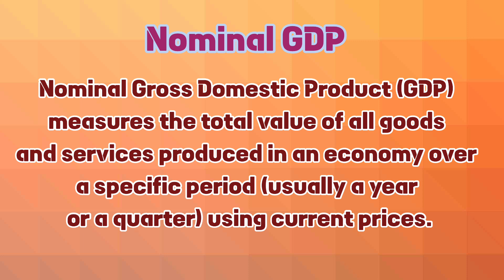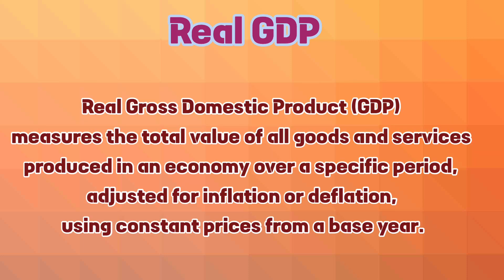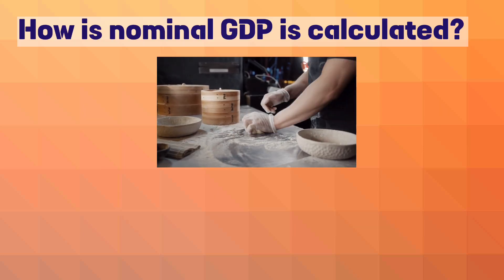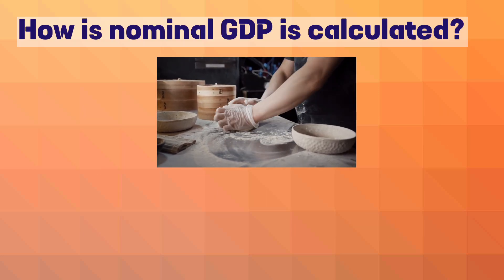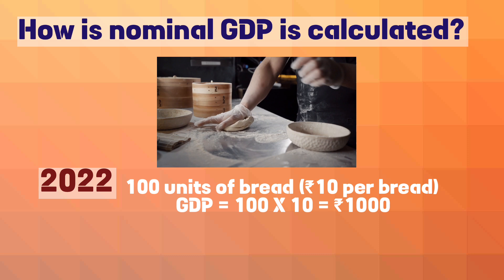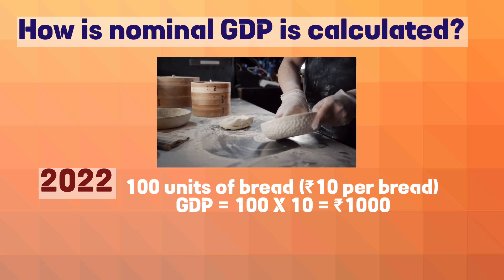Nominal GDP measures the total value of all goods and services produced in an economy over a specific period — usually a year or a quarter — using current prices. Real GDP measures the total value of all goods and services produced in an economy over a specific period, adjusted for inflation or deflation, using constant prices from a base year.